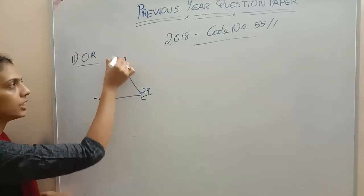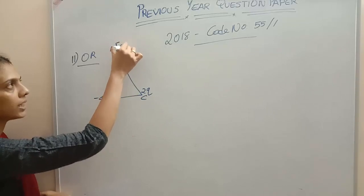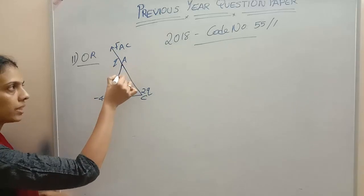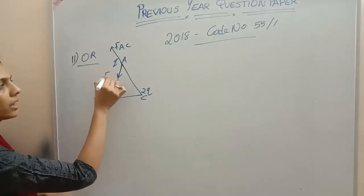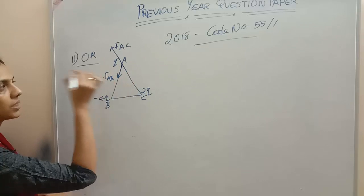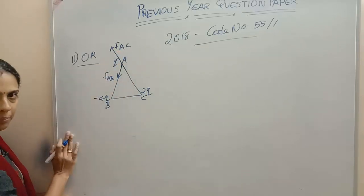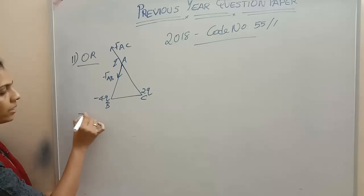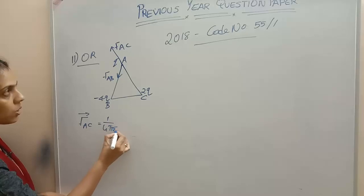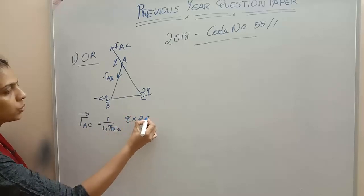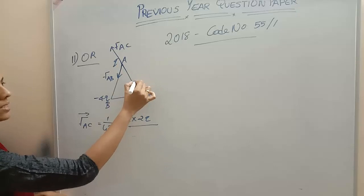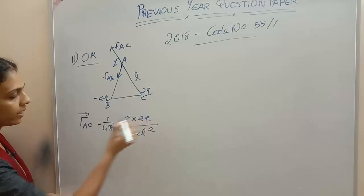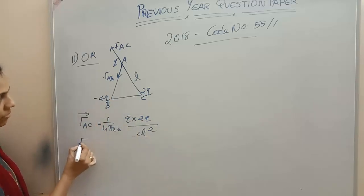Since these two are positive, it will be acting outwards. So along AC it will be acting outwards — positive and negative — so it will be acting like this. This will be FAB. The two forces which are acting will be FAC and FAB. Here FAC — how much will it be?